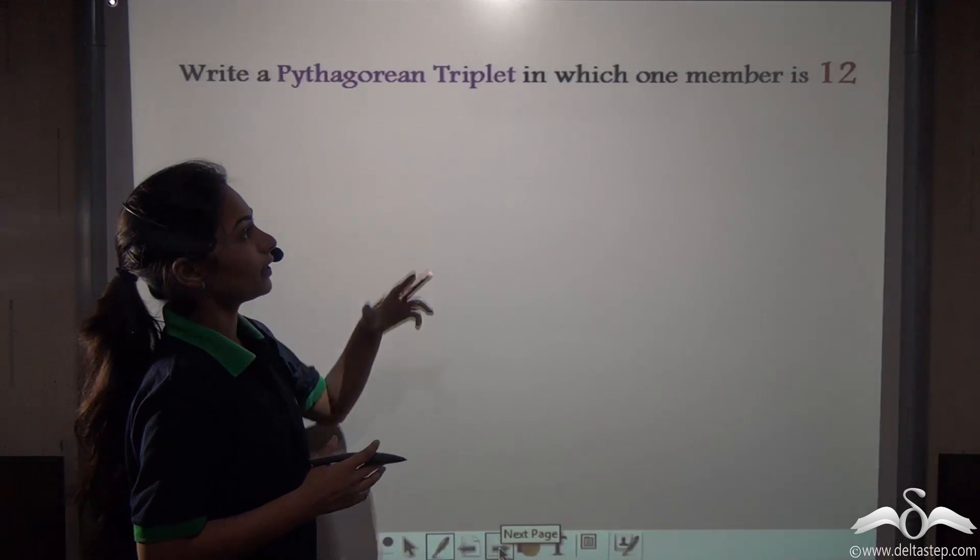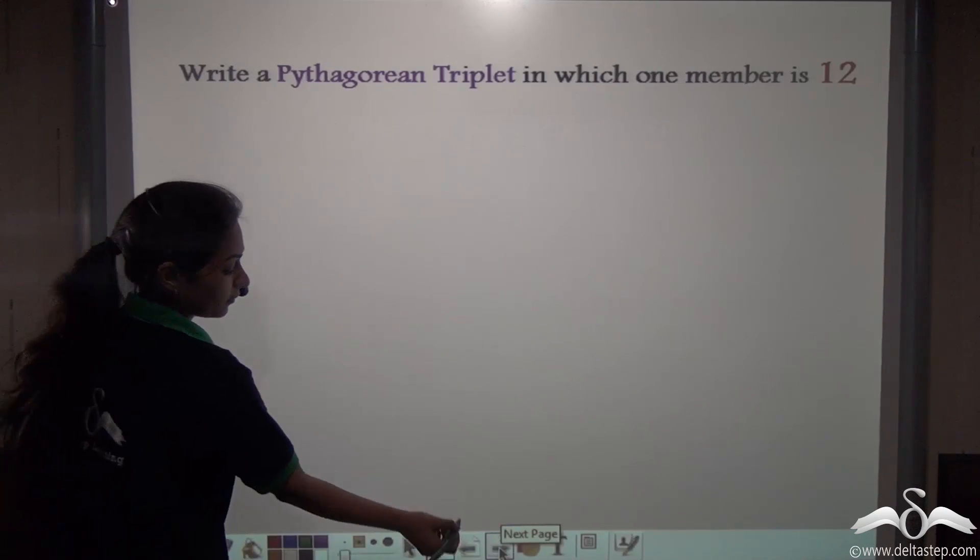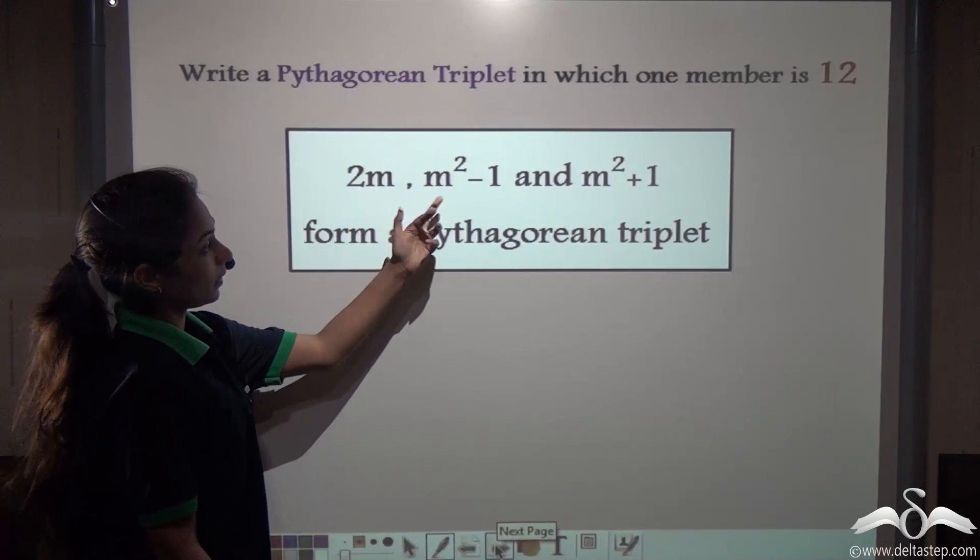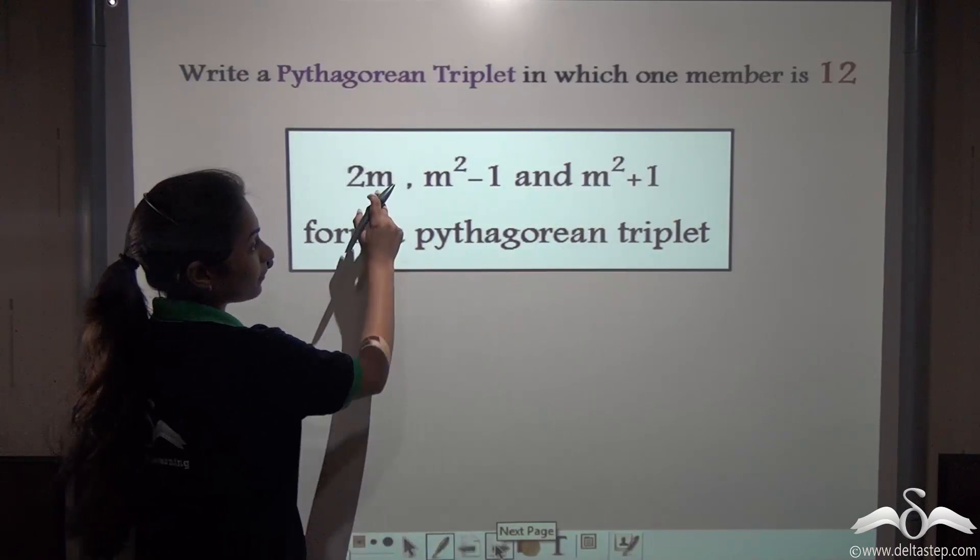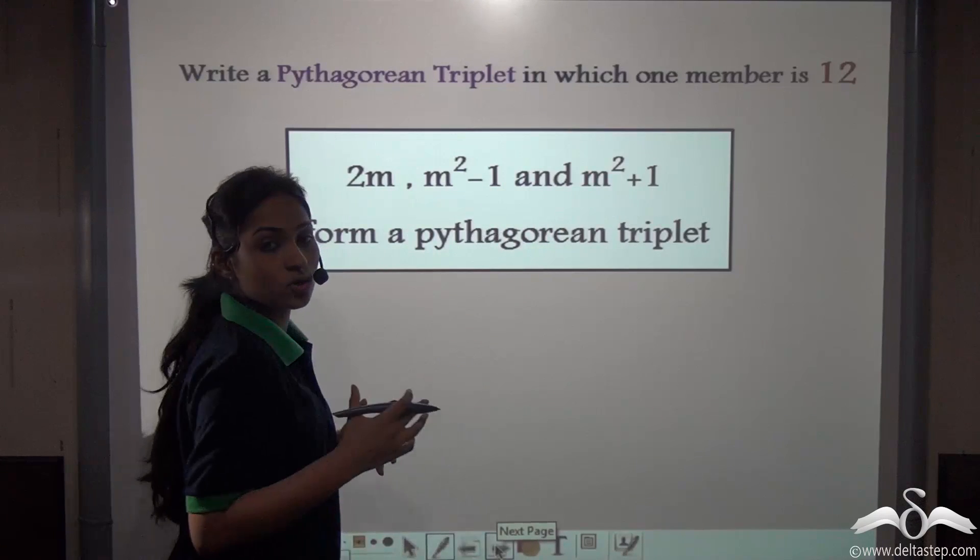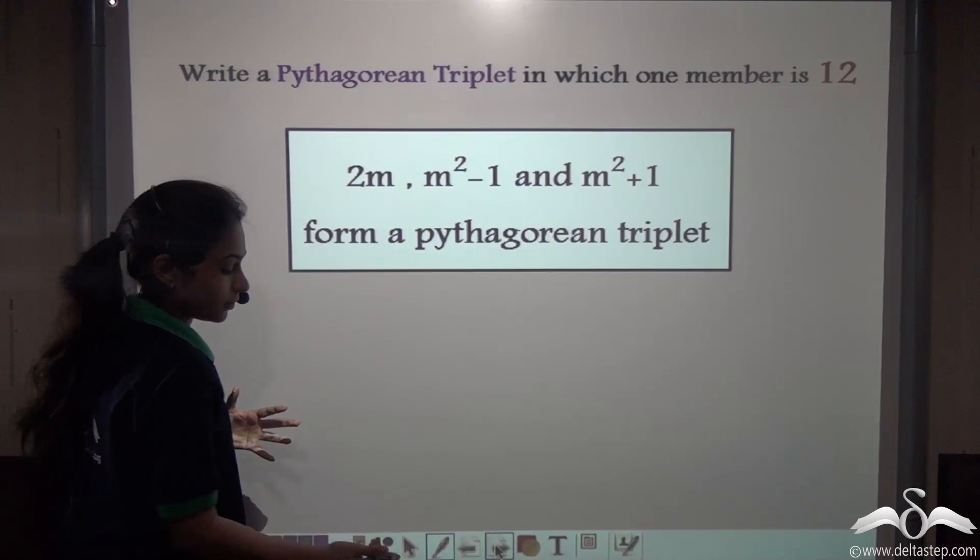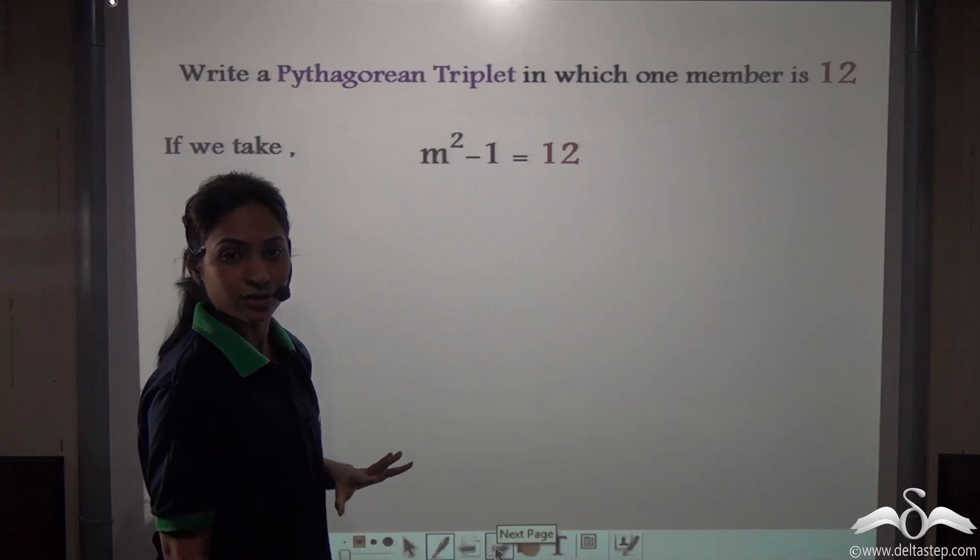Now let us try this out. Write a Pythagorean triplet in which one member is 12. So we have 2m, m squared minus 1, and m squared plus 1. Now 12 can be any one of them. We do not know which one can be 12. So we will take hit and trial method. Let us take m squared minus 1 as 12 first.